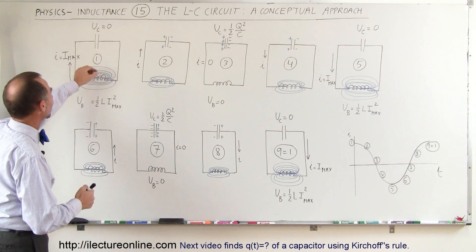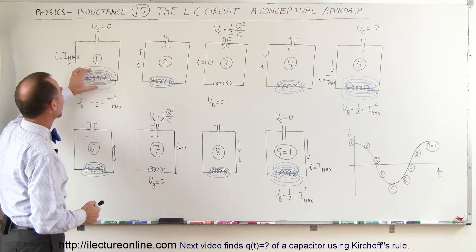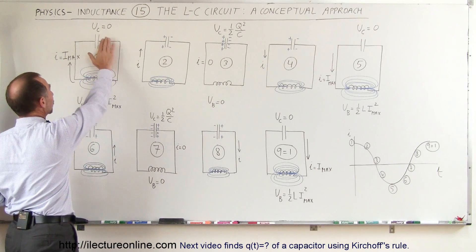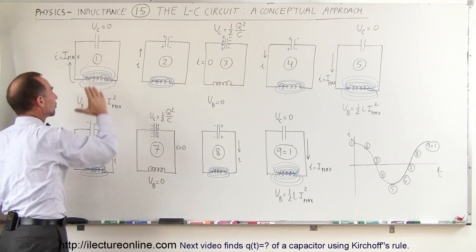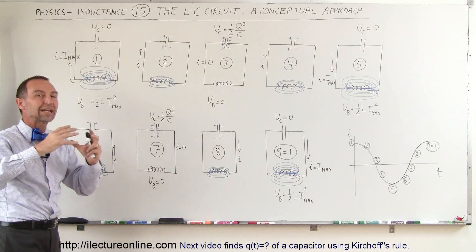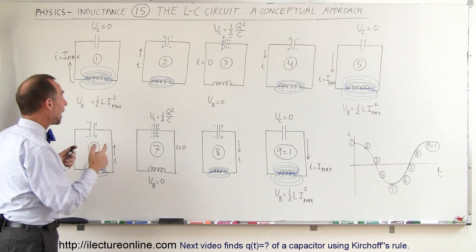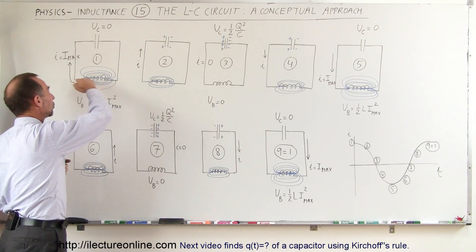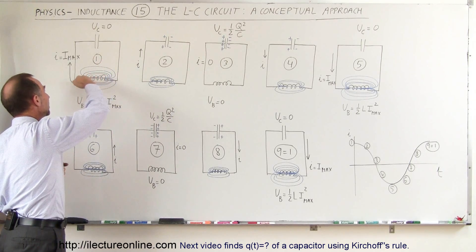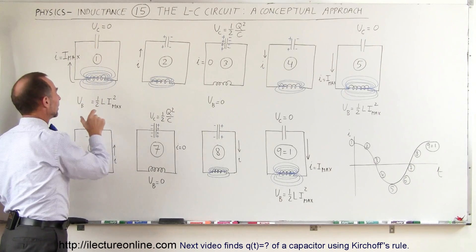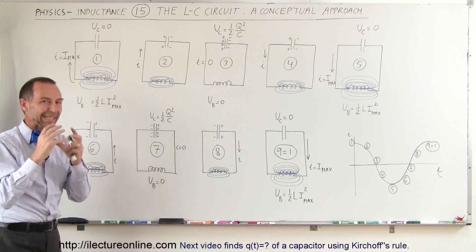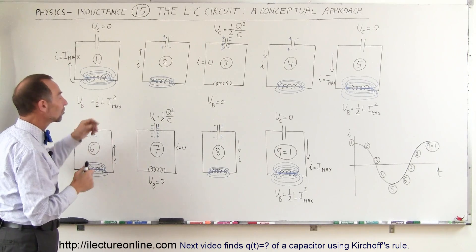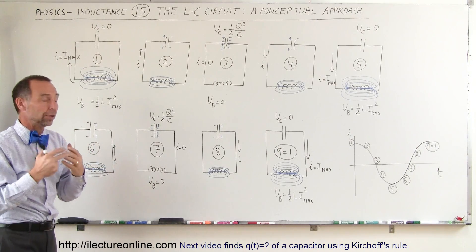So let's say we have this circuit right here — it just has a capacitor and an inductor. We're going to start at the point where the capacitor has no charge on it whatsoever and the inductor has the maximum magnetic field built up in it. That will happen when the current has reached its maximum value. The energy stored in the magnetic field of the inductor is going to be one-half times the inductance times the current squared.